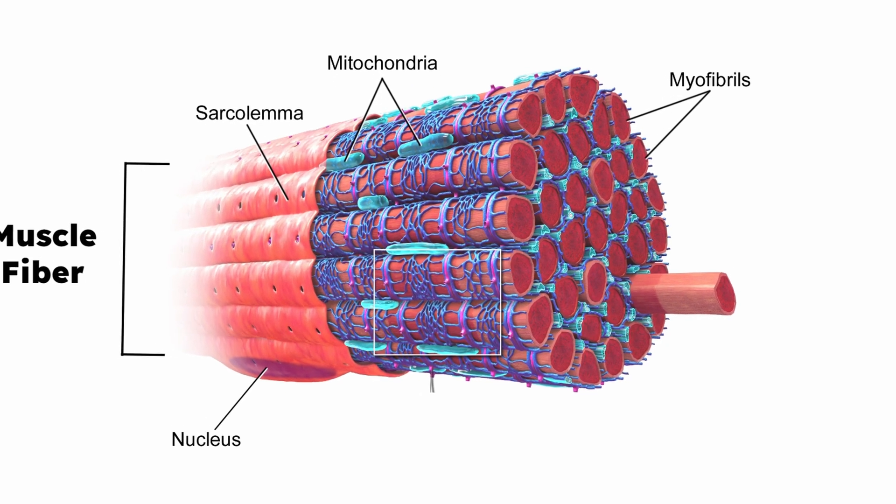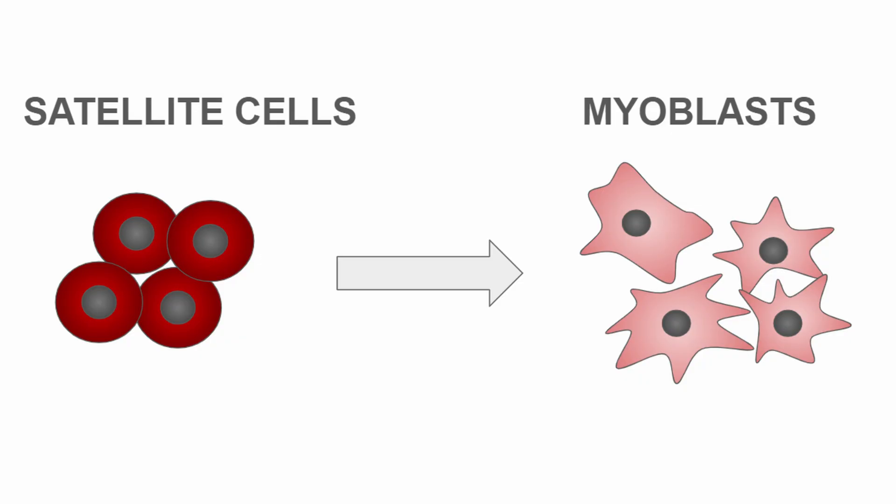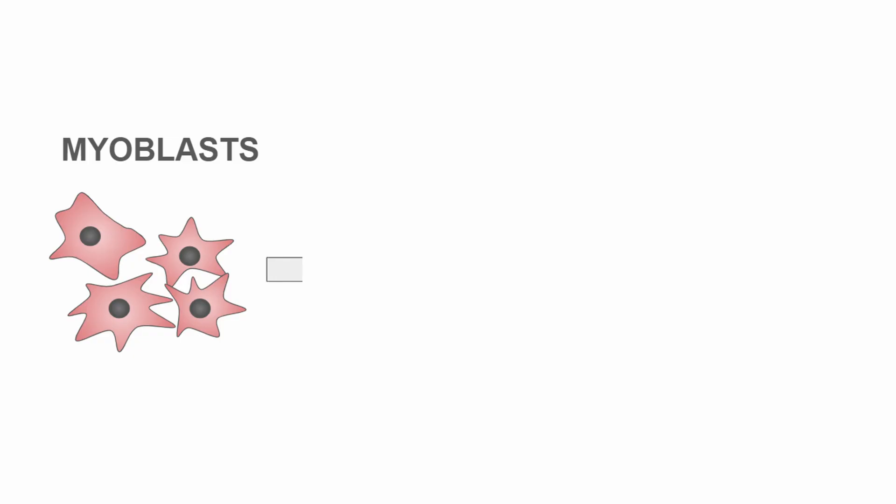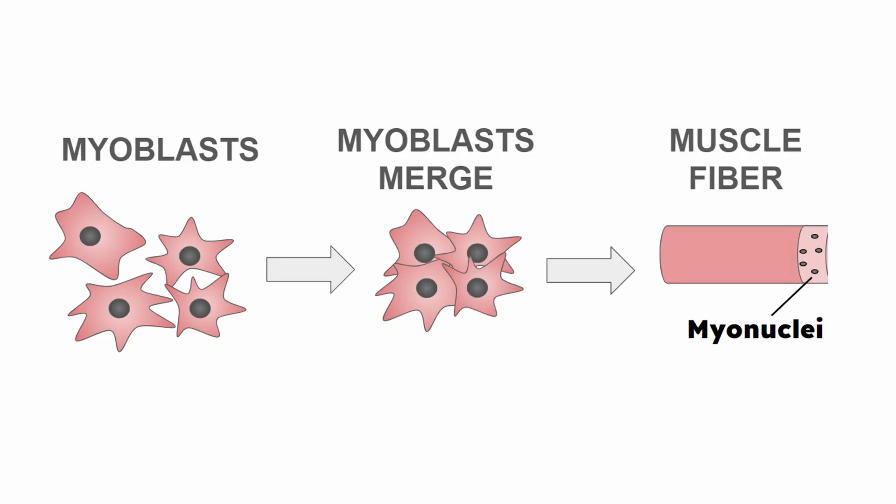This is actually how muscle fibers are formed in the first place. You get a bunch of satellite cells that turn into myoblasts, the myoblasts merge together, and voilà — you get a muscle fiber with a bunch of nuclei floating around. A lot of scientists agree on this part of the myonuclear domain theory, where your muscles get big and they get more myonuclei added to them.